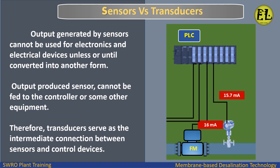Output generated by sensors cannot be used for electronics and electrical devices unless converted into another form. Output produced by a sensor cannot be fed to a controller or other equipment. Therefore, transducers serve as the intermediate connection between sensors and control devices.